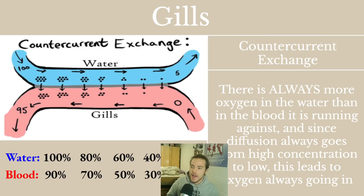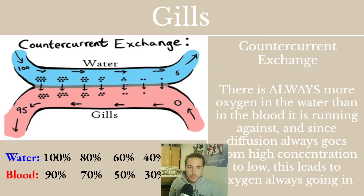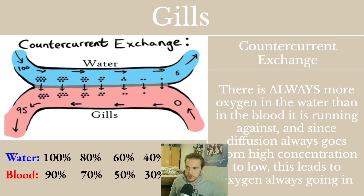A good way to understand this is to imagine if the water and blood ran in the same direction. For the first few segments, the water would have higher oxygen concentration and it would diffuse into the bloodstream. But then you'd reach a balance — an equal amount of oxygen in the gills and the water — and diffusion would stop or equilibrate. You're not getting all of the oxygen out of the water. Counter-current exchange is a more efficient way to extract all the oxygen from the water, ensuring that at no point along the gill does that balance occur.